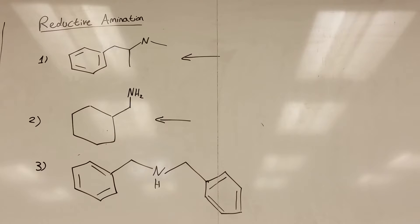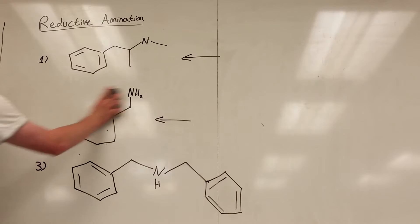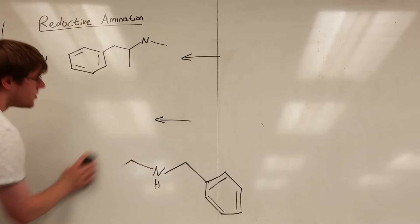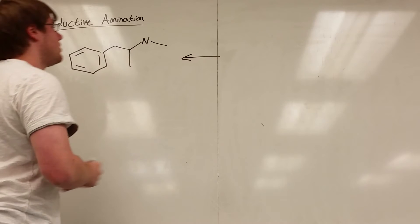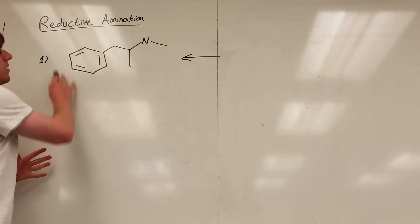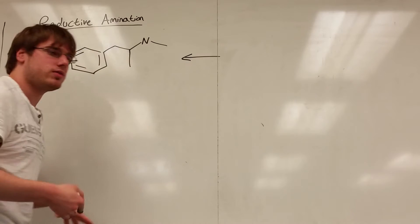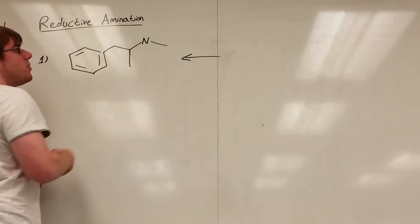Let's go through number one. So for number one, this is actually how you make meth, by the way, because this is the structure of methamphetamine. But the first thing you should do is look for the functional group. Now we have benzene. We can't really mess around with benzene yet, but we can mess around with this.